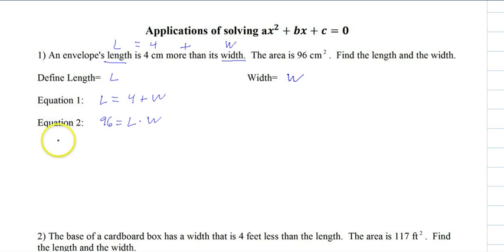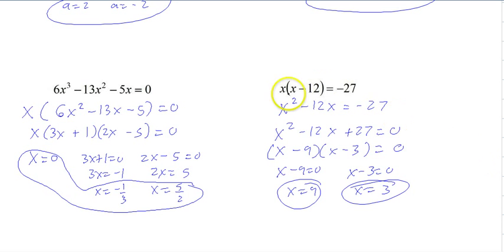We'll use substitution. Let's write 96 equals L times W. And the reason I'm writing this equation first is this one's already set up as L equals this, which will allow me to plug it in for the L very cleanly. So 96 equals, parenthesis for the L, 4 plus W and W. And then there's our quadratic.